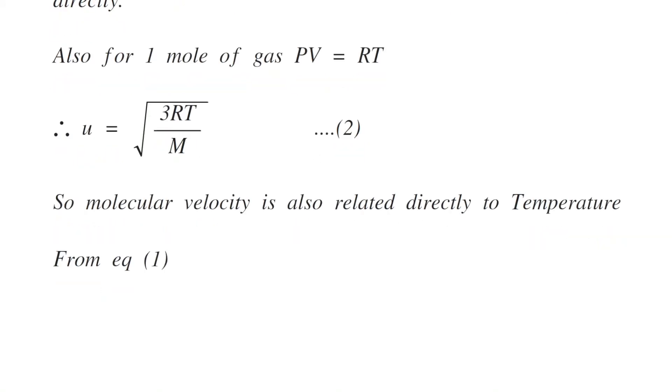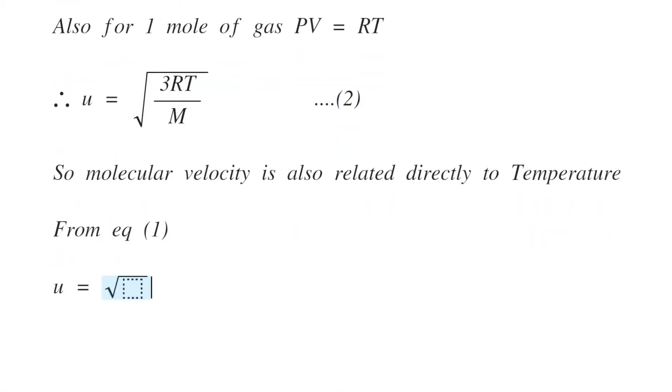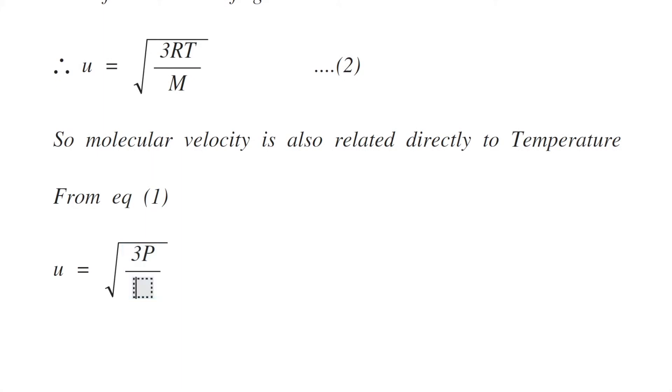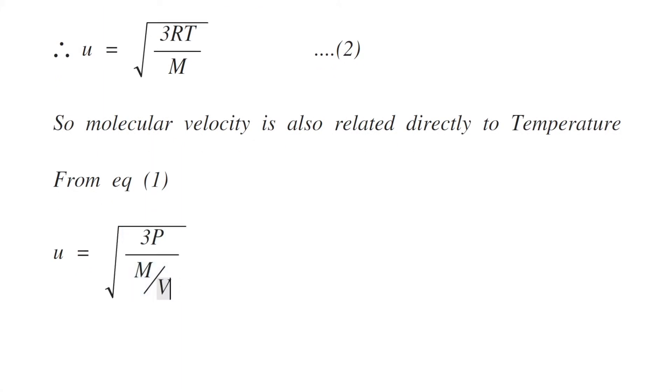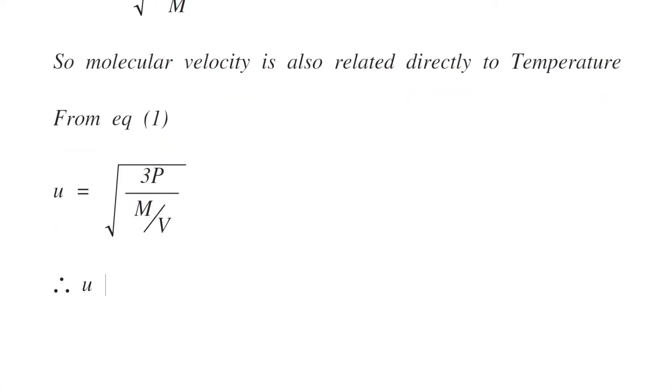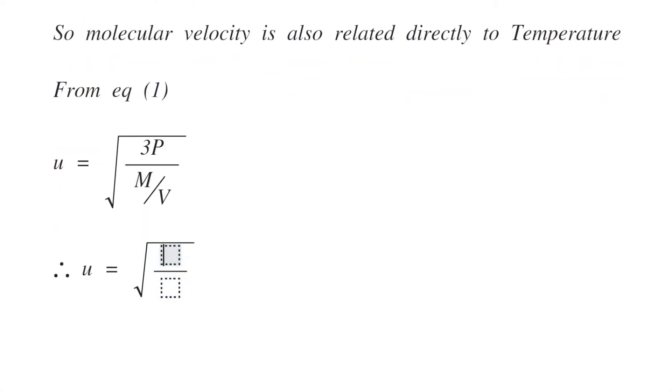From equation 1, we can say U equals square root of 3 P divided by M by V, where M by V is density. So, we can replace that: U equals square root of 3 P divided by D, where D is the density of the gas.